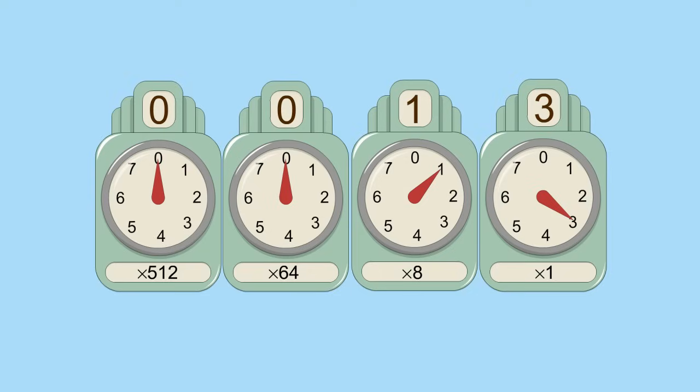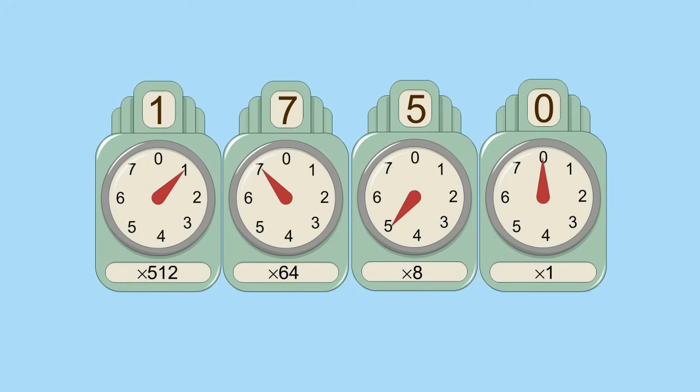Let's take, for example, the octal number one seven five zero. As in decimal, the value of the octal number is the sum of all its digits times their multipliers. So, the number one seven five zero represents one times five hundred twelve, plus seven times sixty-four, plus five times eight, plus zero ones,